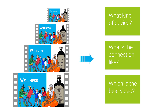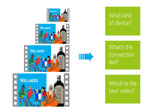While the person is watching the video, it keeps monitoring the connection. And if, for example, the connection speed goes down, it can change the size of the video so that playback isn't interrupted. And if the connection later improves, it will adapt again, and so on.